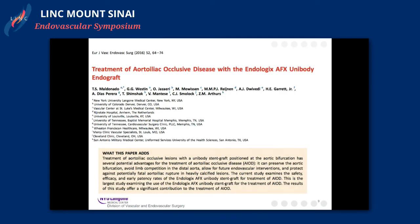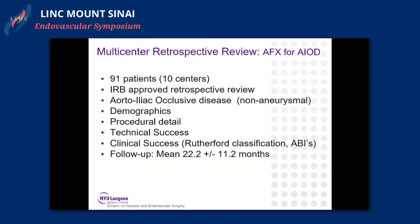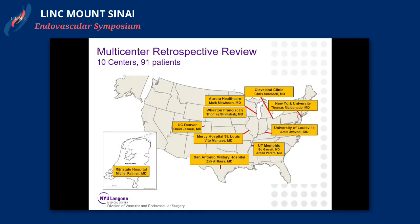We chose to look at this in a multi-center study in the U.S. and Europe. We had 91 patients across 10 centers, IRB approved. We looked at non-aneurysmal disease — all occlusive cases. We assessed demographics, procedural detail, technical success, and clinical success as judged by Rutherford classification and ABIs, with a mean follow-up of 22 months. Sites were located in the Netherlands and the U.S.